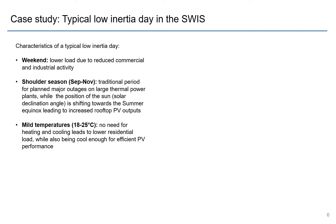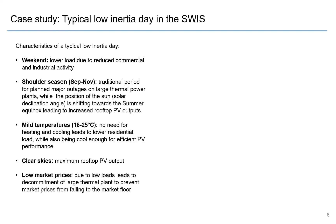Around this time of year, temperatures are very mild — 18 to 25 degrees Celsius — so there's little need for heating or cooling in residential loads, and cooler temperatures also benefit rooftop PV efficiency. On your lowest inertia days, you always have clear skies giving maximum PV output. Finally, because of low loads there are low market prices, which incentivizes large thermal plants to decommit to avoid prices falling too low. This withdrawal of synchronous generation further reduces inertia during these decommitment periods.